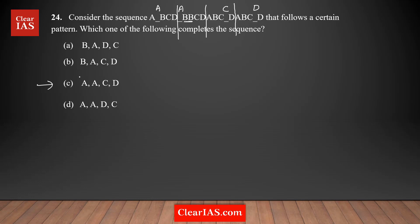So the answer is option C — A, A, C, D — which completes the sequence. If you're not able to recognize the pattern, you can plug in each answer choice into the series and check whether a recognizable pattern forms. If no pattern emerges, that option is not the answer.